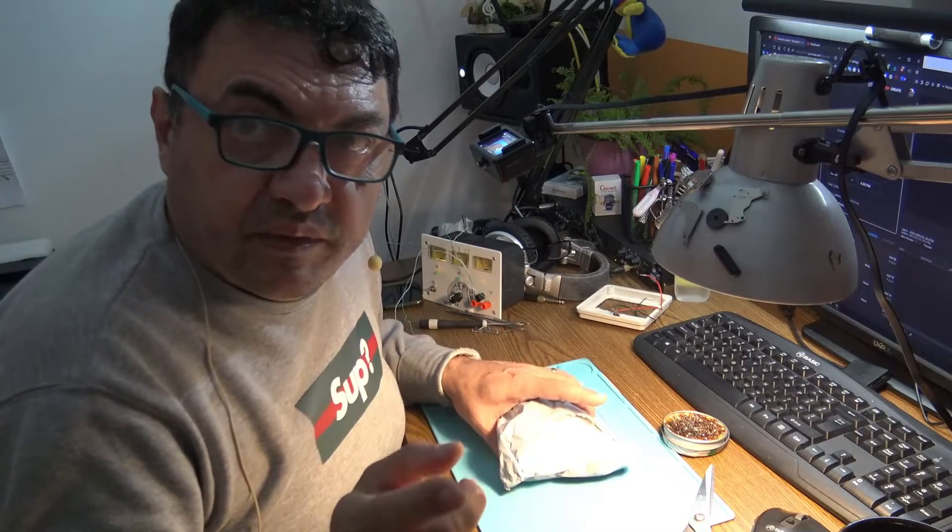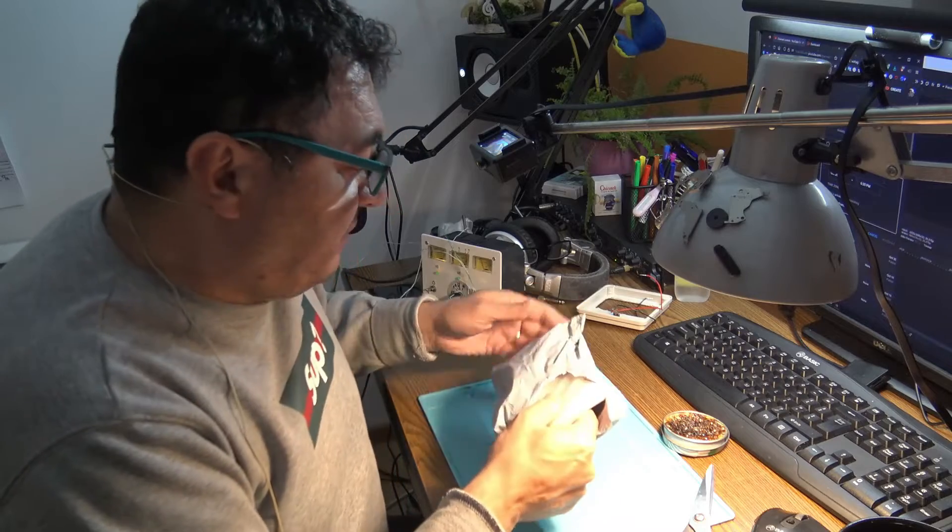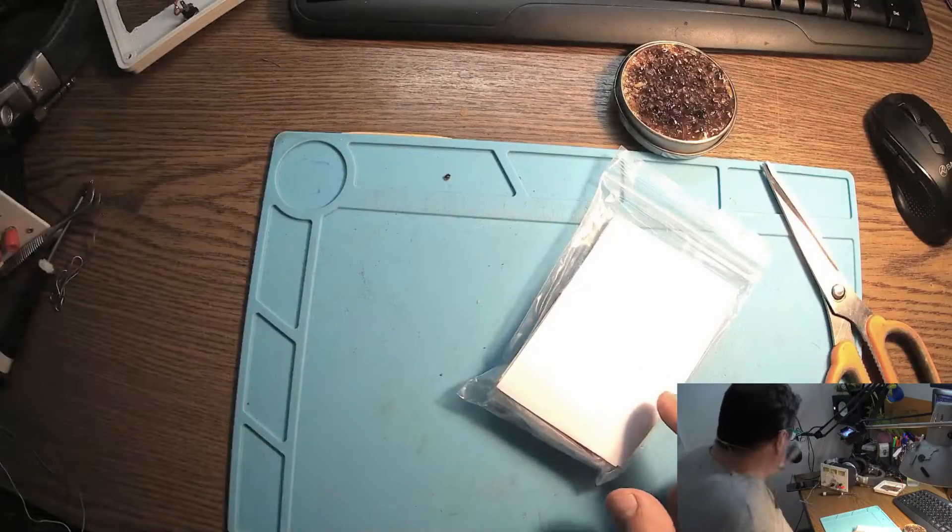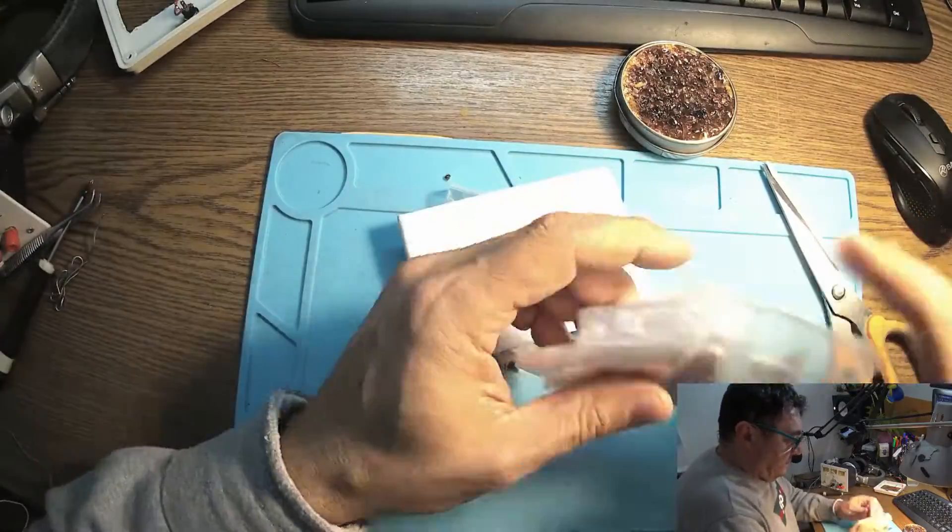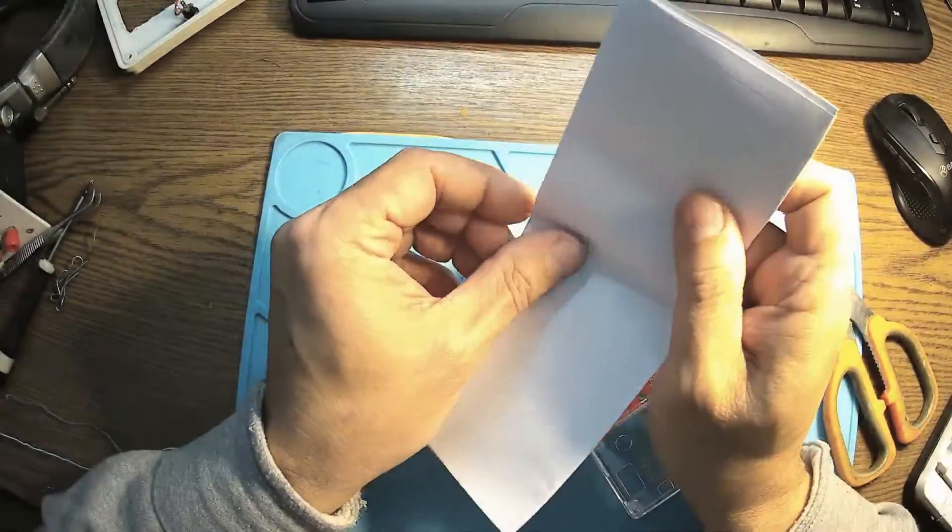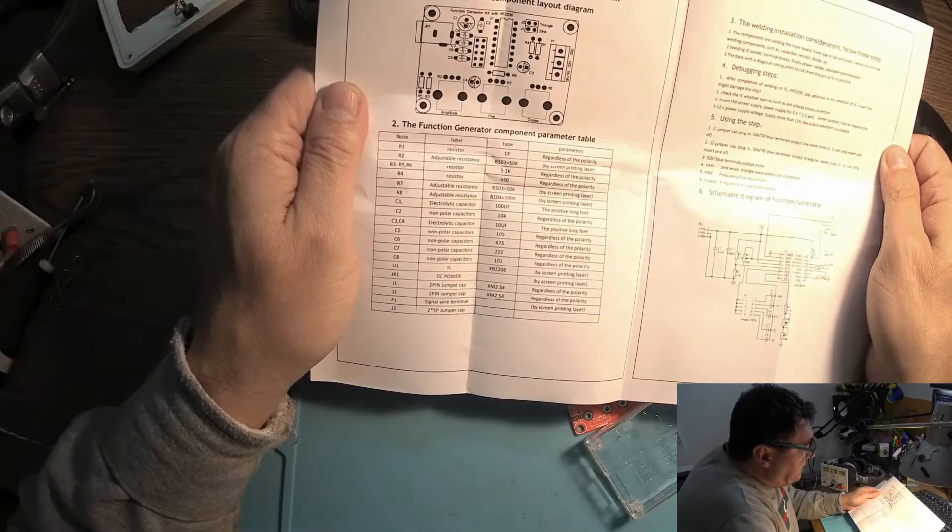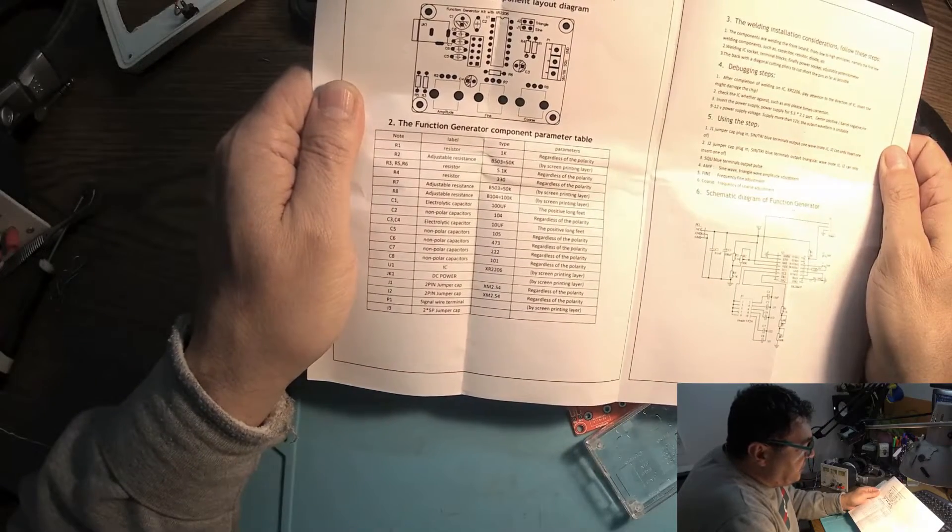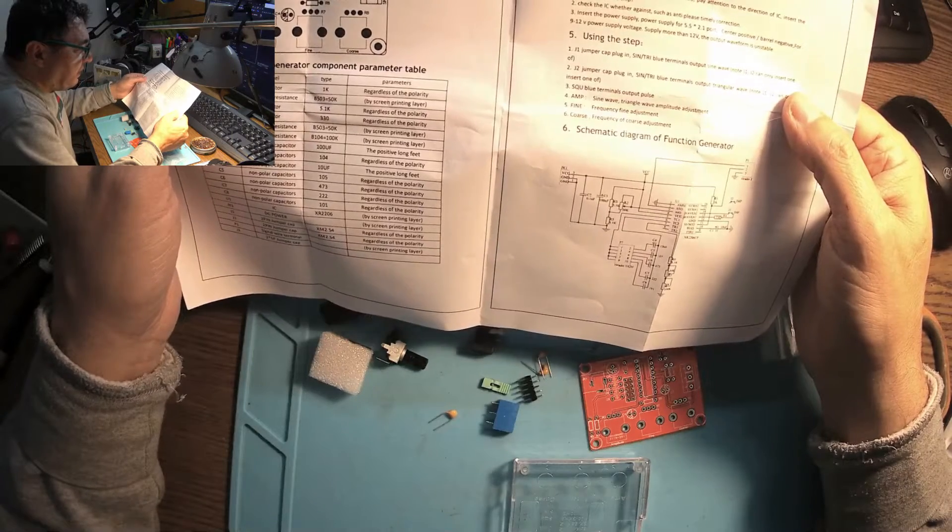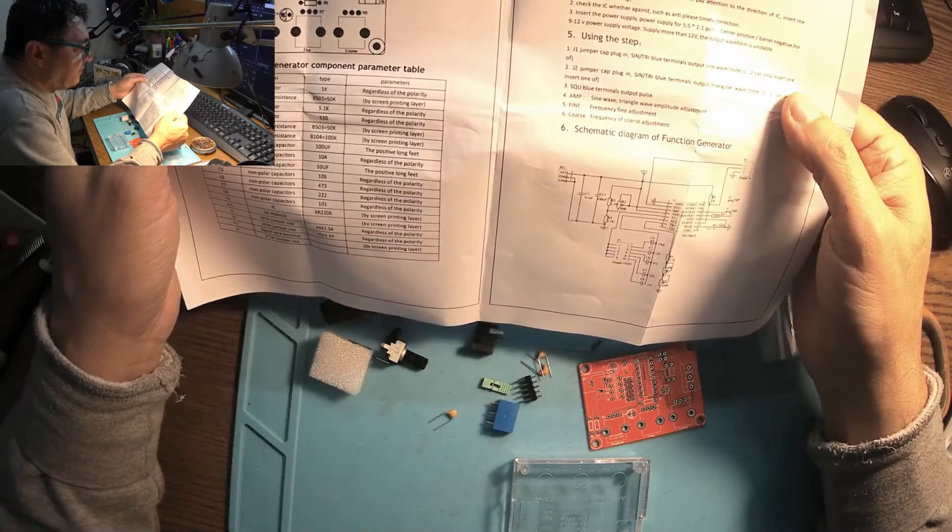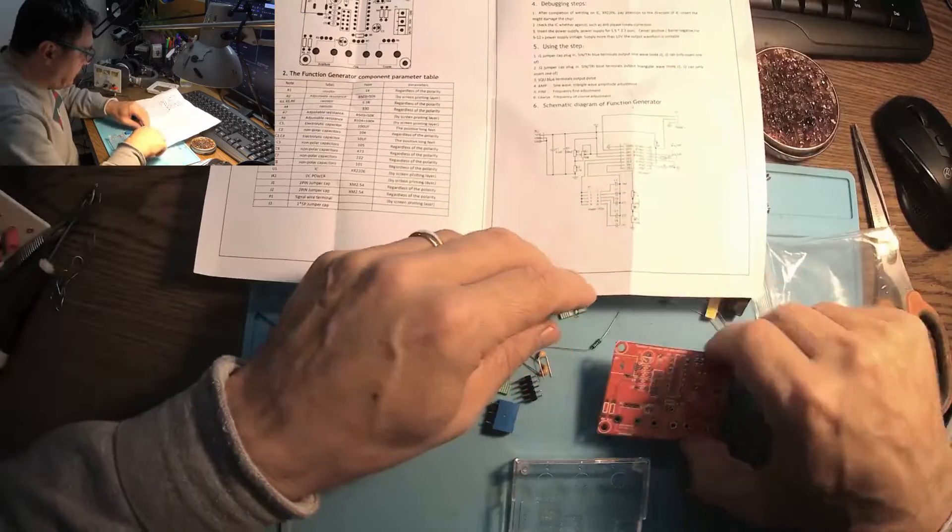Hey there, I'm sure you have seen this before, but it's looking like a fun evening Wednesday project. Look what I got by the post today. This is an XR2206 function generator kit with capacitors, resistors, diodes, welding IC sockets, terminal blocks, power sockets, and adjuster potentiometers. Let's do this.